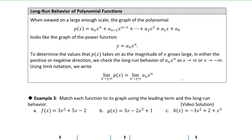So we can just look at the leading term in order to determine the long run behavior of a polynomial. The long run behavior is determined by the leading term. All we need to do is figure out what the leading term is, and that will tell us what the long run behavior is of the entire polynomial.